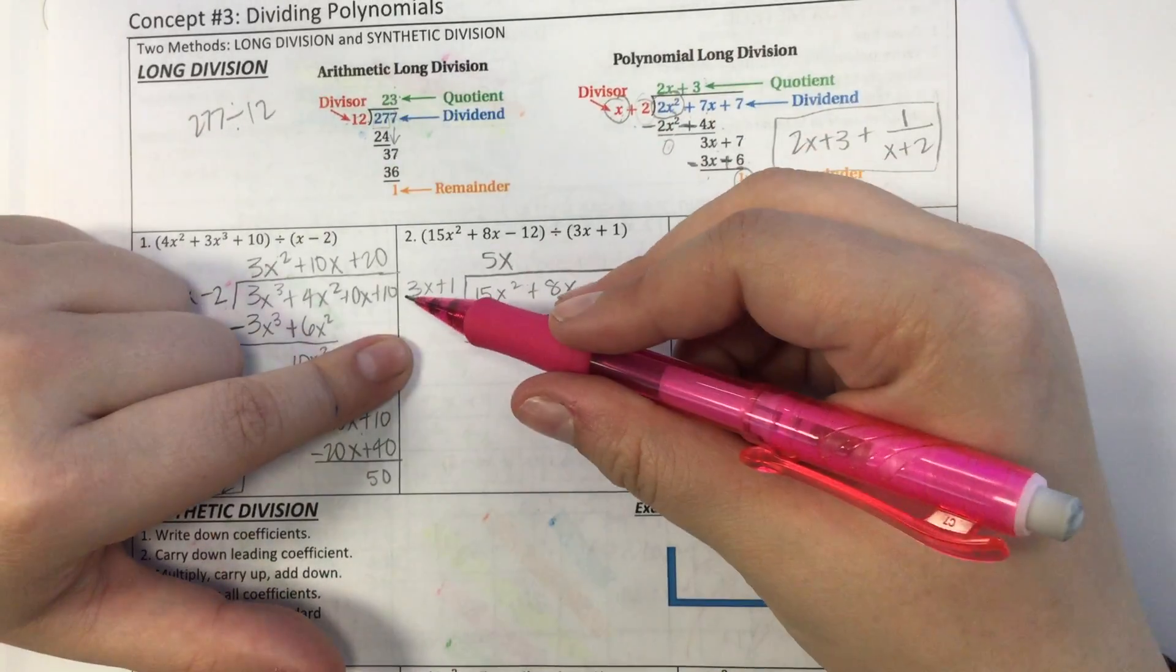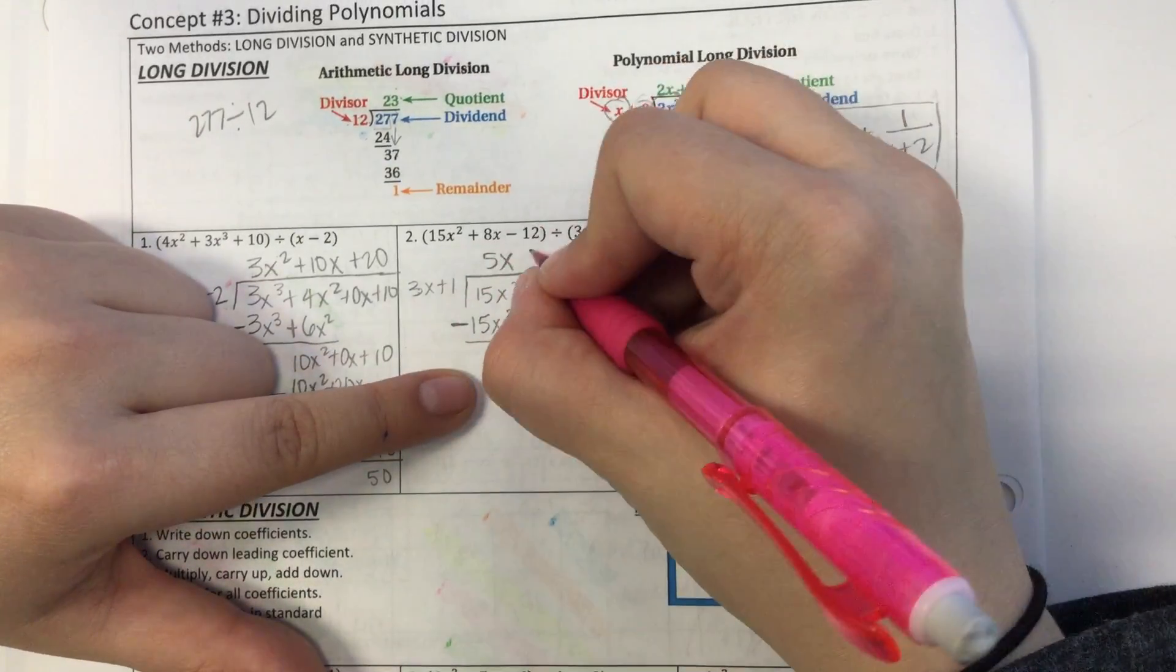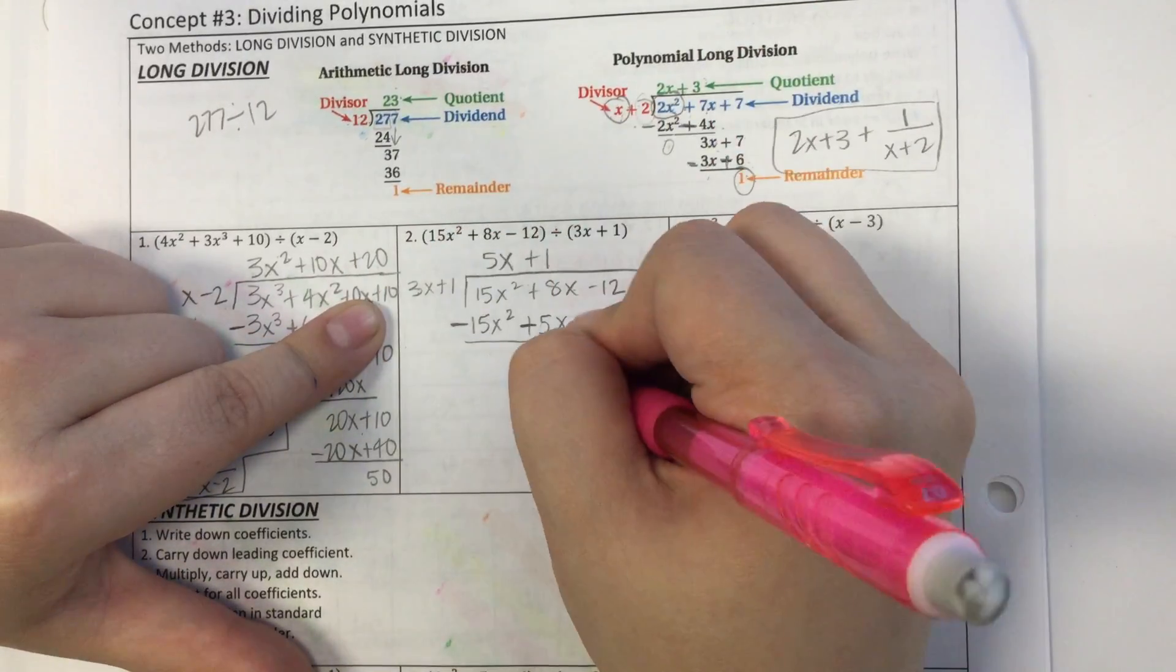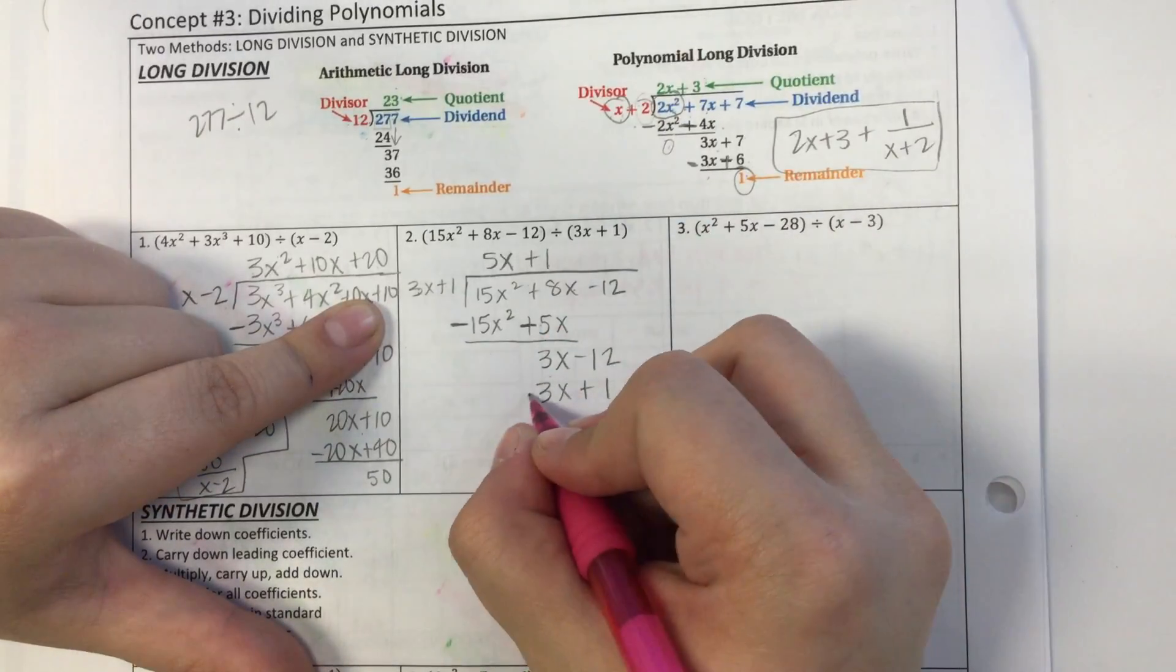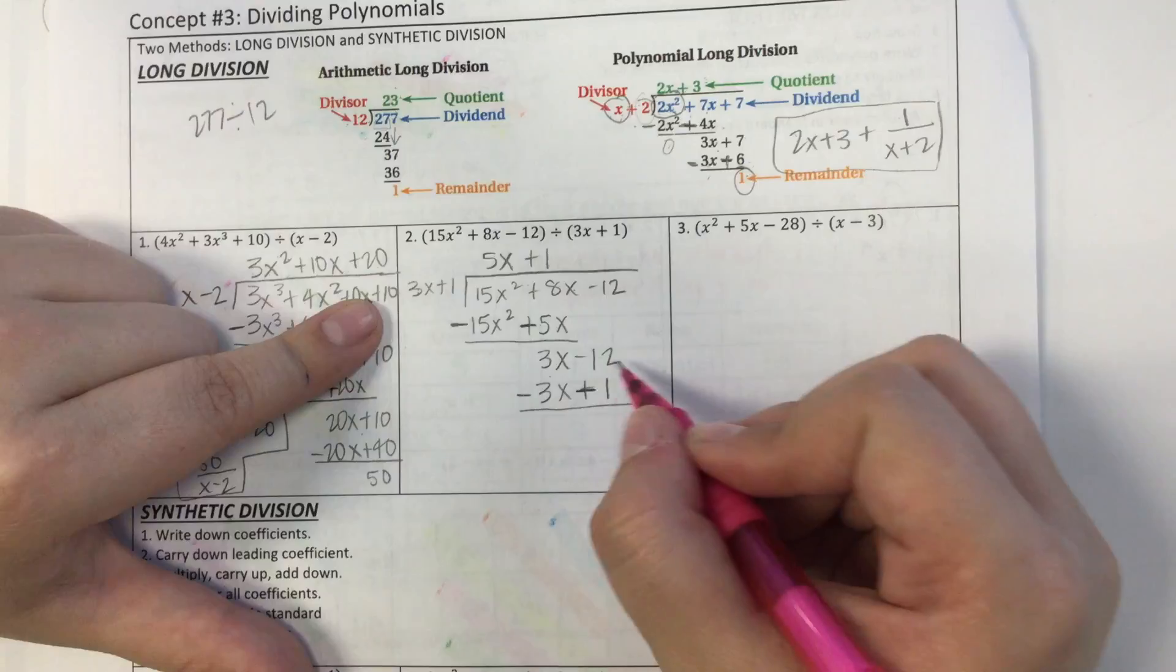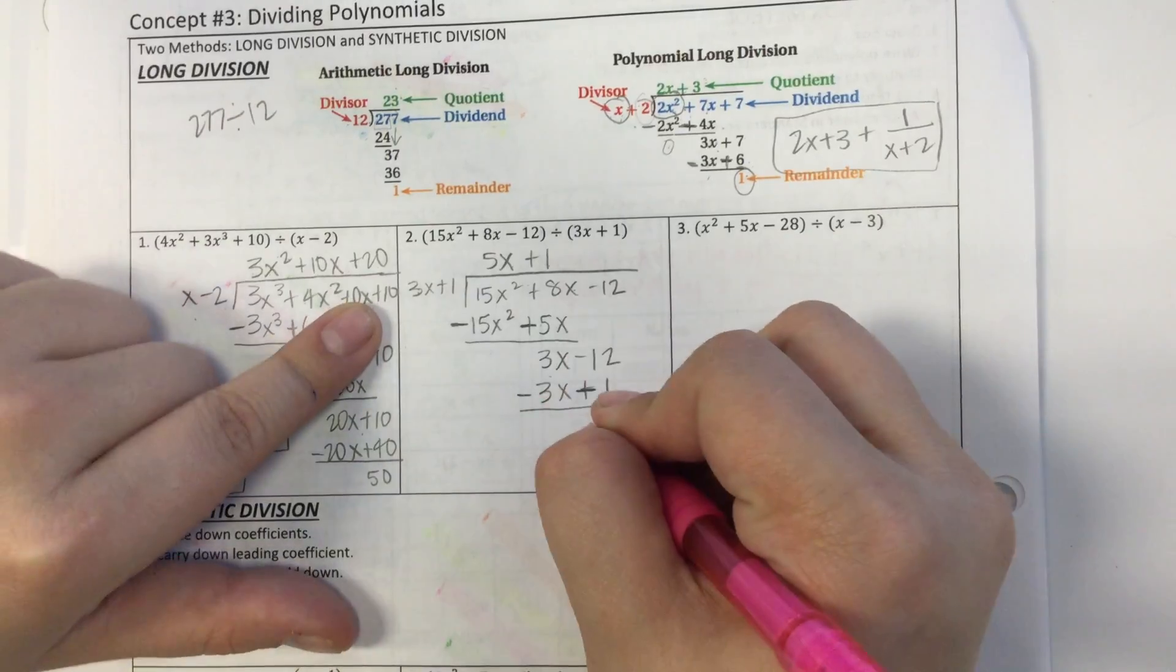Okay, well, to get from 3x to 3x, I just multiply it by 1. 1 times 3x is 3x. 1 times 1 is 1. And then I subtract. Those go away. Negative 12 minus 1 is negative 13.